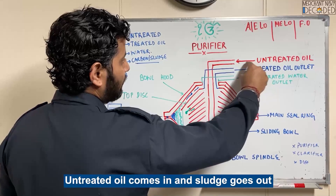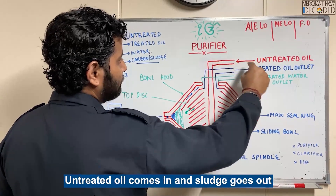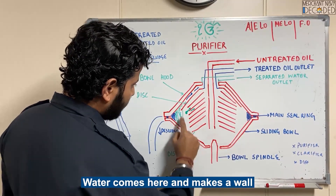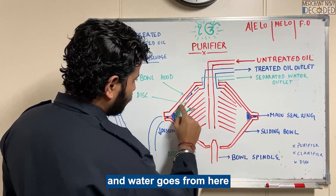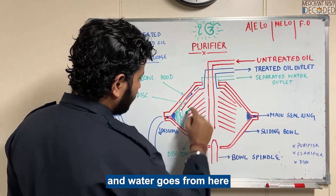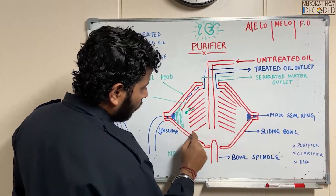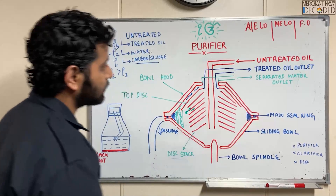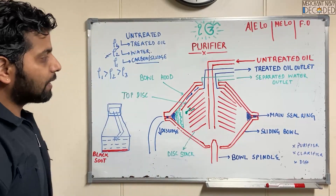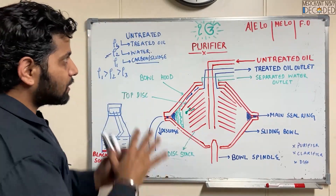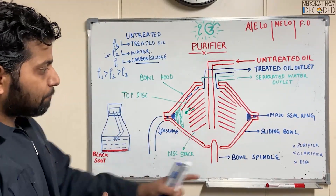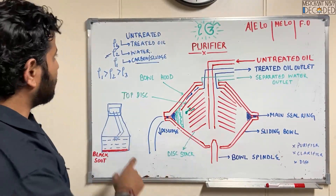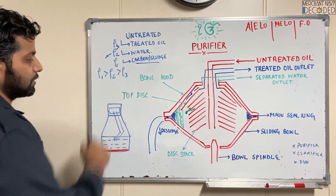So that is how a purifier works. Untreated oil comes in, sludge goes out into the sludge space, water is separated and exits from the water outlet, and oil always goes from the inside and exits from the treated oil outlet. So a purifier is separating three things.